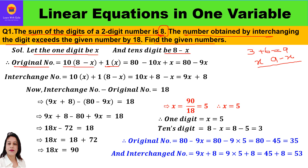To form the original number, multiply 10 with the tens digit (8 minus x) and 1 with the ones digit (x). Expanding: 10 into 8 is 80, 10 into minus x is minus 10x, and 1 into x is plus x. Combining like terms: minus 10x plus x is minus 9x, so the original number is 80 minus 9x.